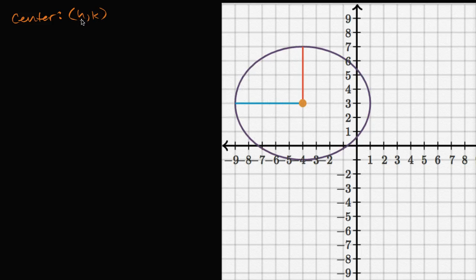So let's say the center is at the point h comma k, and let's say that you have a horizontal radius, so the radius in the x-direction, horizontal radius is equal to a.